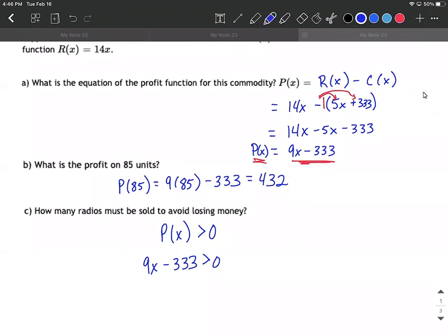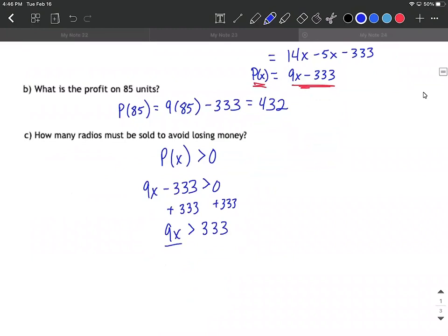Now it shouldn't be too bad to solve this down. We're going to add 333 to both sides. Didn't multiply or divide by a negative, so our sign doesn't change. Then to get x by itself, we'll divide by 9. So x has to be greater than 333 divided by 9, which is 37. You have to sell at least 37 units to be profitable.